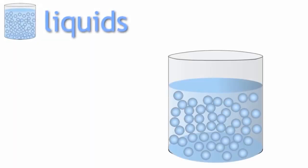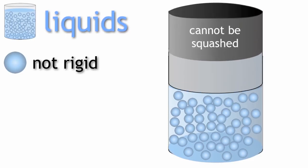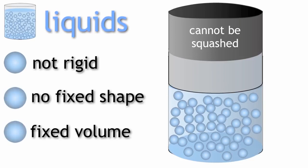So, liquids are not rigid, but because their particles are closely packed as in solids, they cannot be squashed or compressed. They do not have a fixed shape, but they do have a fixed volume.